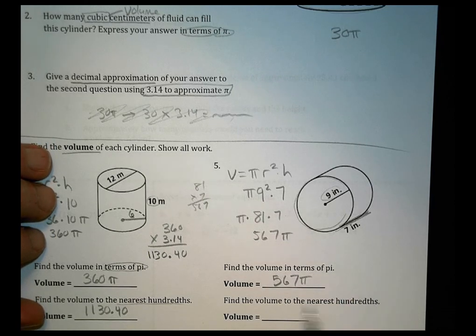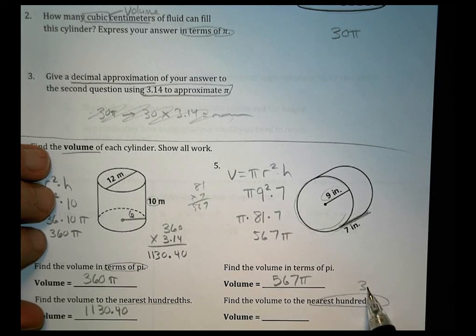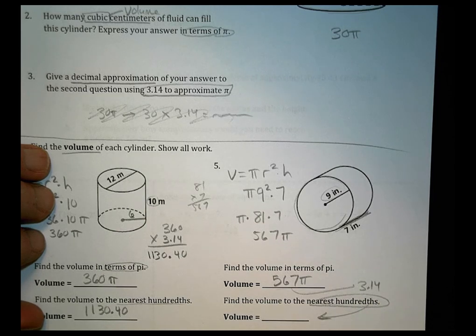And then you want to go ahead and find the volume to the nearest hundredths. We're going to multiply 567 times 3.14 once again. So you multiply those together. That will give you a solution for that one there.